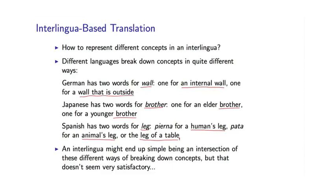If you're not careful, the interlingua is simply going to be an intersection of these different ways of breaking things down. It's very difficult to imagine a priori all the different ways you could break down concepts in the world. Every time you add a new language to your translation system, the chances are you will be surprised to find some distinction made in that language which you hadn't thought of when designing the interlingua. So the bottom line is: designing an interlingua might be a very, very difficult task because of these kinds of conceptual problems.